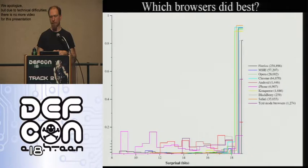Any graph that tries to show everything going on in this data set is going to be really complicated because it's half a million data points. This one shows, for each category of browsers — Firefox, IE, Opera, Chrome, Android, iPhone, Konqueror, BlackBerry, Safari, and a lumped-together collection of links and other text-mode browsers — how good or bad it was from a uniqueness and trackability point of view.